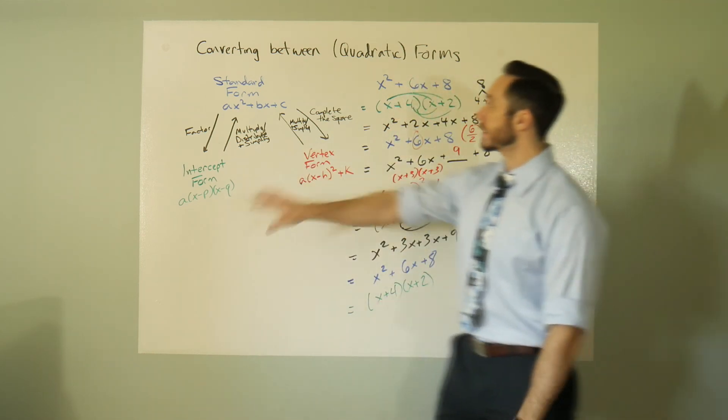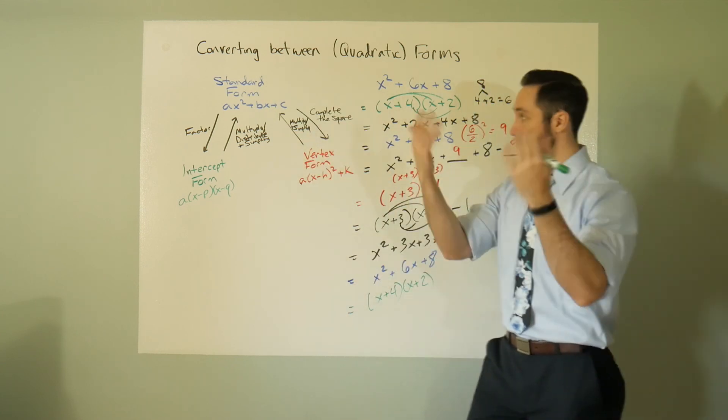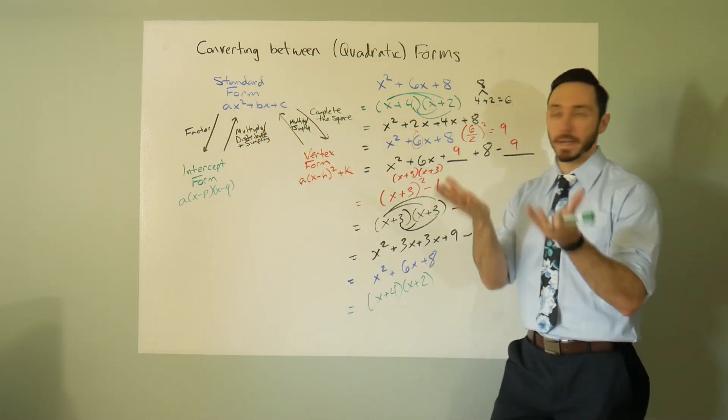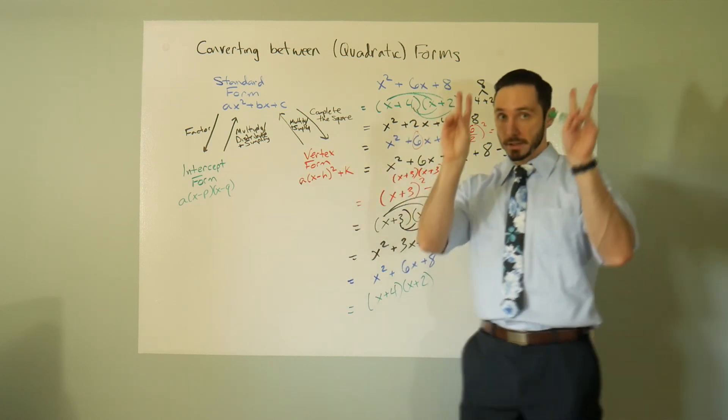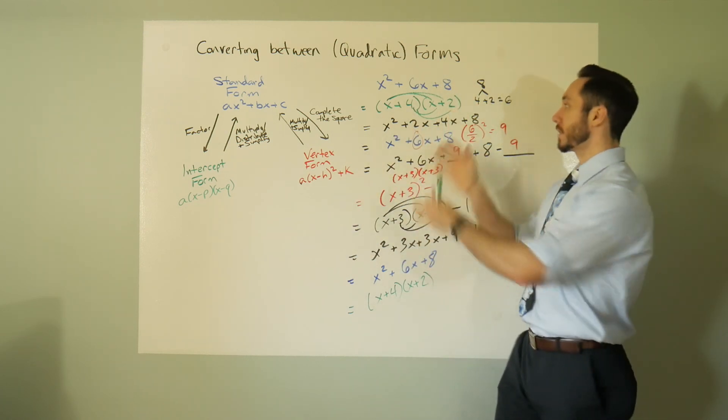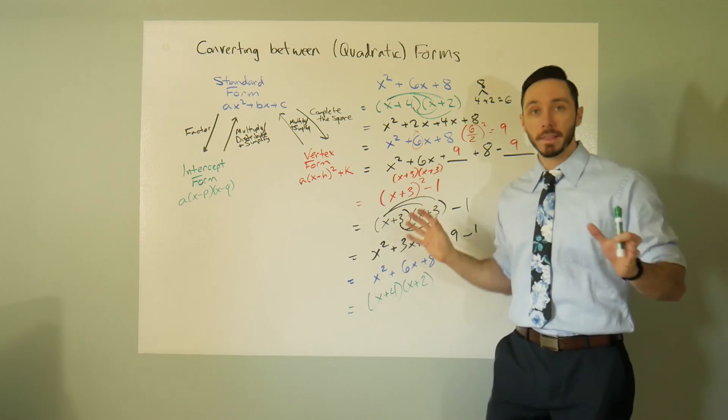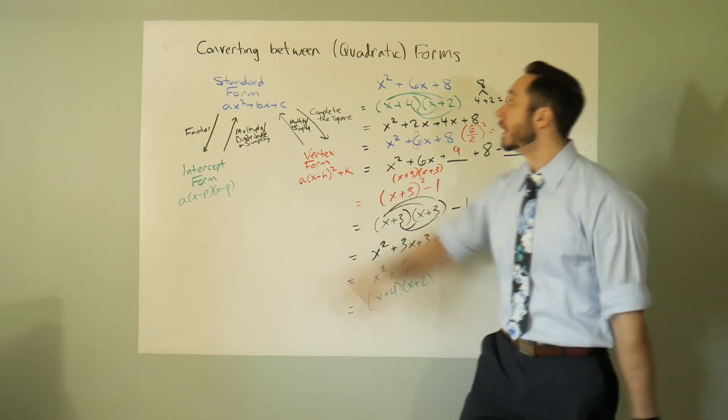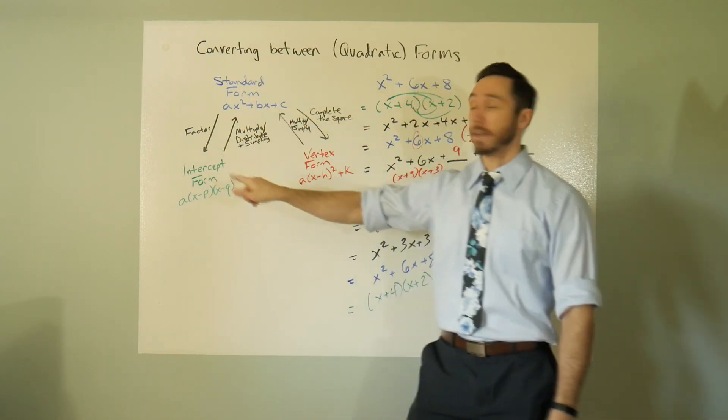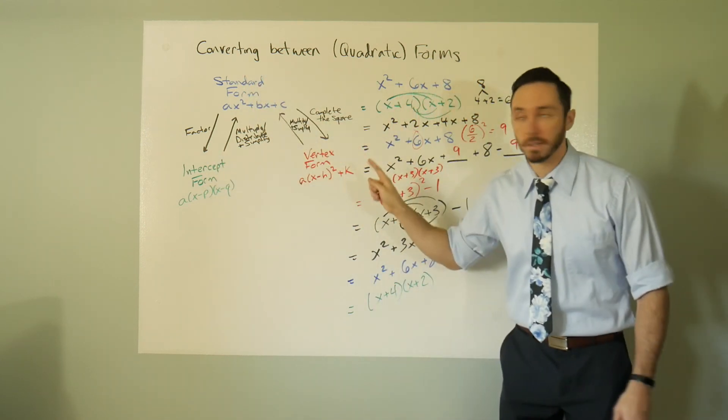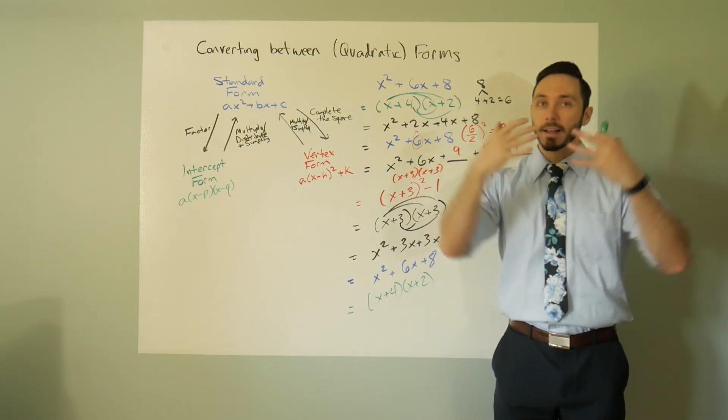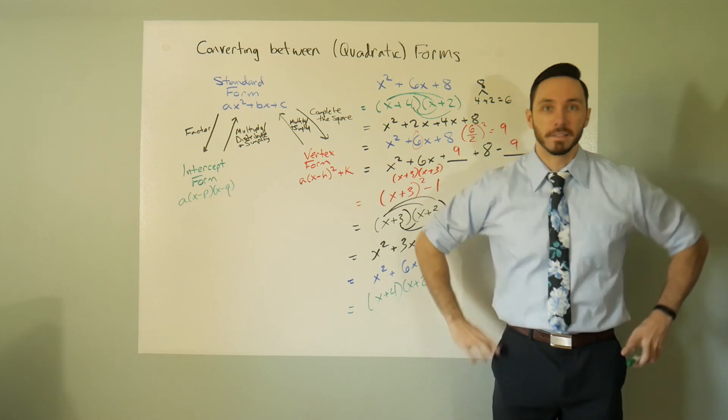To go from intercept to standard, it's just simplifying, multiply out, simplify. Vertex to standard, just multiply out, simplify. That's why we call this the standard form. If you just go through the motions of simplifying, that's what you get. You want to get from standard to intercept, you factor. You want to get from standard to vertex, you complete the square. Please continue to math on, I will do the same. I'll see you in the next video.